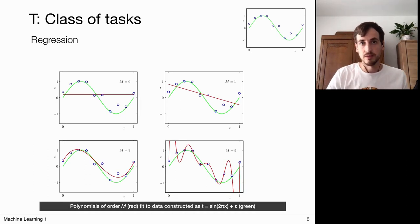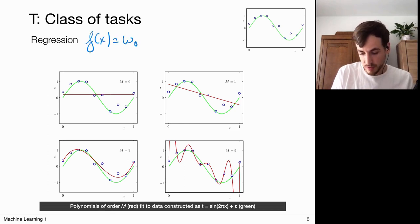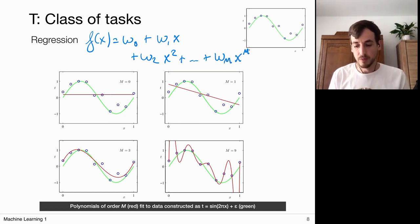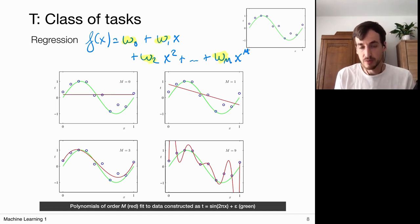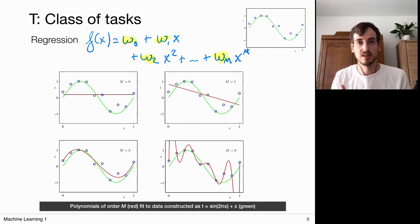If I wanted to do this manually, I would define some class of functions — let's say polynomials of the form f(x) = w₀ + w₁x + w₂x² + ... + wₘxᵐ. I have choices to make: first the order of the polynomial, and then I have to find the optimal weights that make sure this function comes close to my target value. I've measured these blue points and now I want to find a function that best fits through them. The green line is the ground truth reference that we want to recover but don't know.